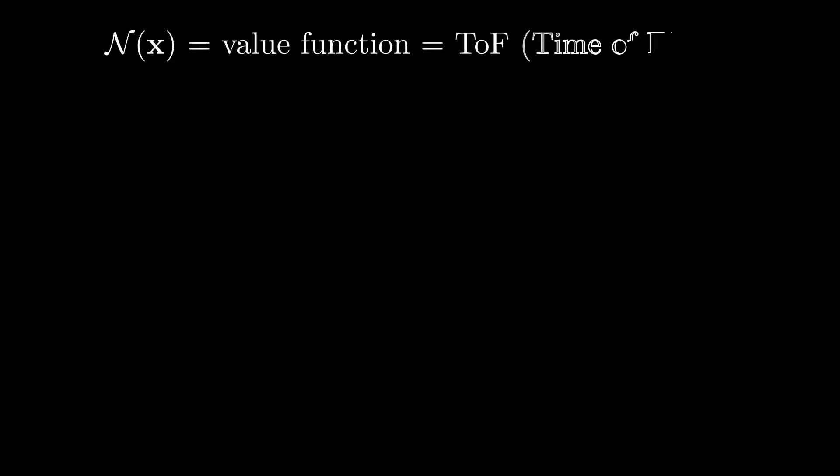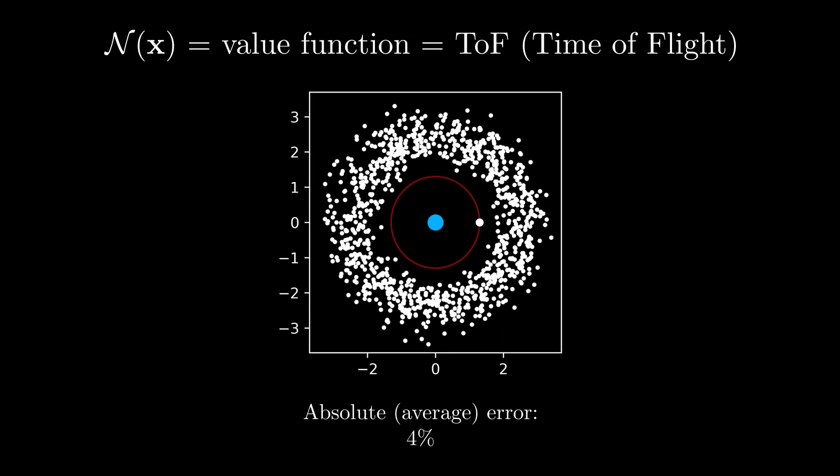Finally, we considered approximating the value function for the purpose of predicting the optimal rendezvous time of flight from a much larger range of initial starting conditions, covering most of the asteroid belt, as opposed to only one nominal trajectory. Augmenting all of these trajectories and subsequently learning the value function resulted in a network which, for any initial conditions in the asteroid belt, is able to predict the optimal time of flight with an absolute average error of less than 4%.